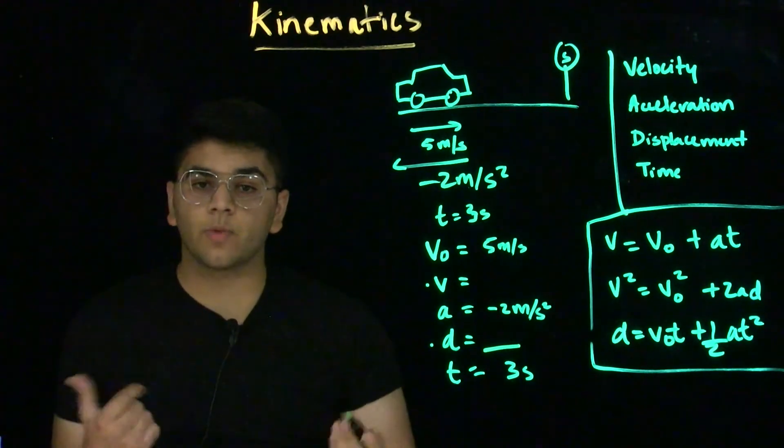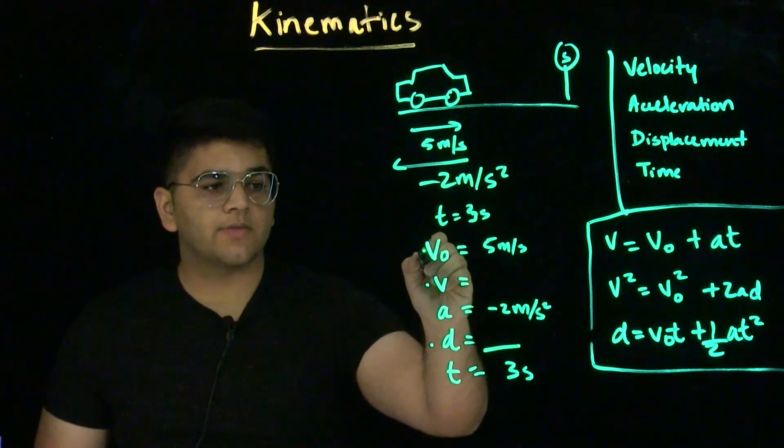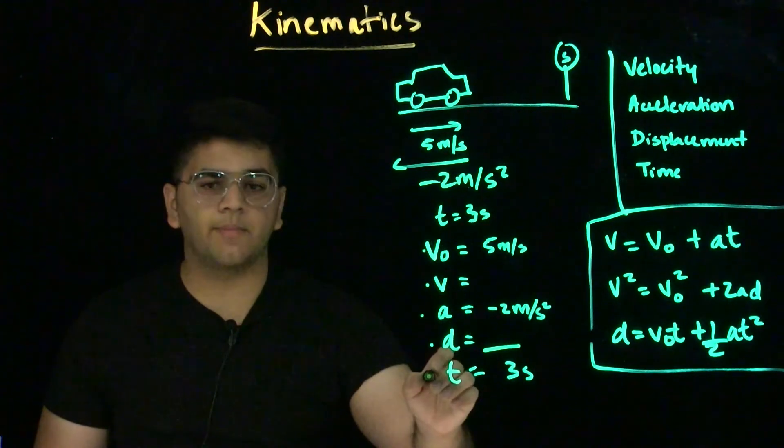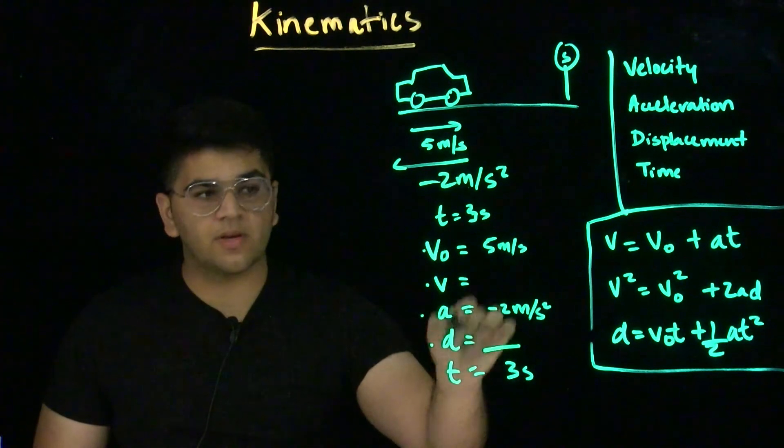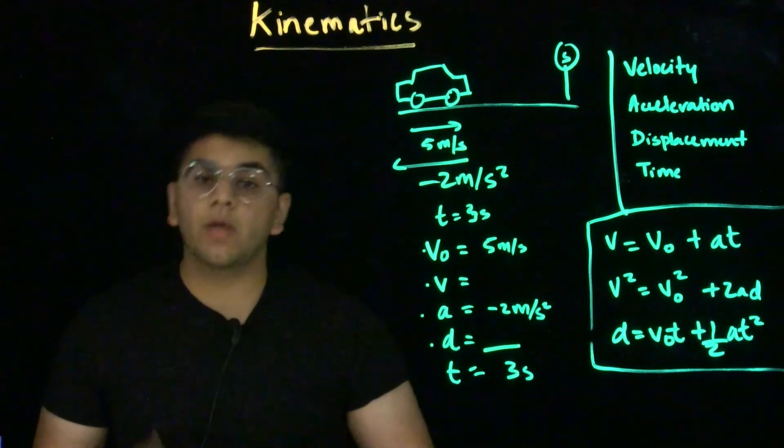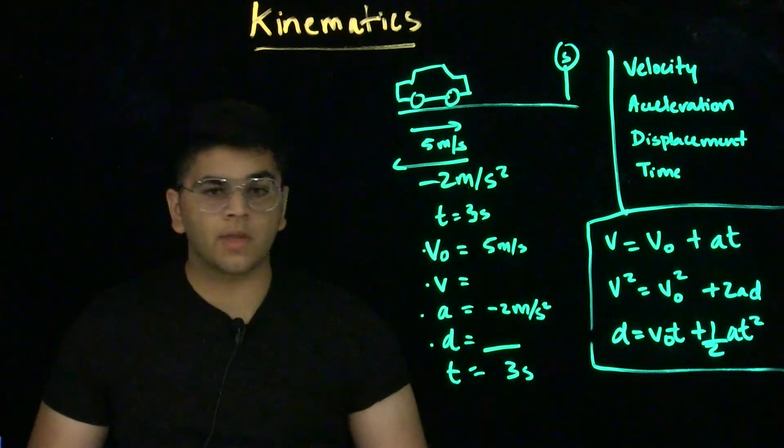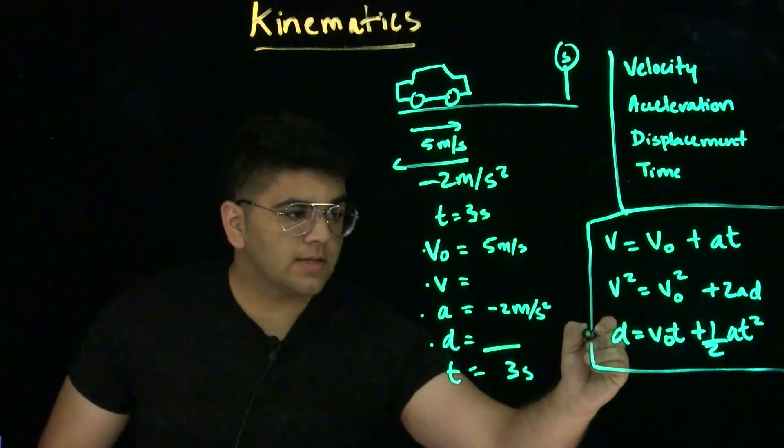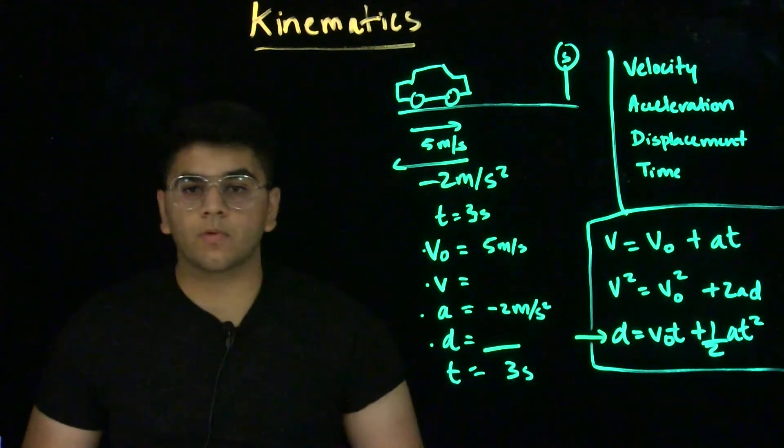We want an equation where we have initial velocity, acceleration, and time, and displacement, but not final velocity. That way, we can solve for displacement. And as you can see, it's in this third equation where we can do that.